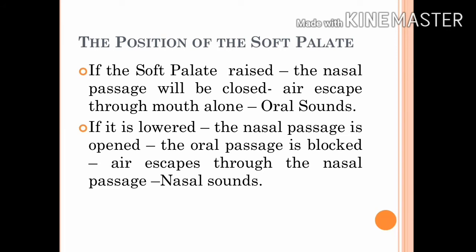According to the position of the soft palate, sounds may be nasal or oral. During the articulation of oral sounds, the soft palate is raised so that it touches the back wall of the pharynx, the nasal passage is closed, and the air escapes only through the mouth. During the production of nasal sounds, the soft palate is lowered so that the nasal passage is opened, the oral passage is blocked at some point, and the air escapes only through the nose. Consonants thus include both voiced and voiceless sounds, oral and nasal sounds.